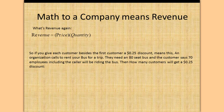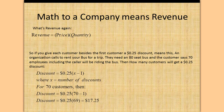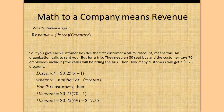If you give each customer besides the first a $0.25 discount, here's what that means: an organization calls to rent a bus for a trip. They need an 80-seat bus, and the customer says 70 employees including the caller will be riding. How many customers get a $0.25 discount? The discount equals $0.25 times (X minus 1), where X equals the number of discounts. For 70 customers, that's $0.25 times 69, which equals $17.25.